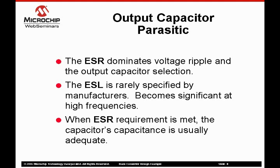Rarely is the capacitor's capacitance value an issue when operating at moderate frequencies of less than 100 kilohertz. Exotic capacitors such as specialty electrolytic, large ceramics, or film capacitors are useful in space-limited applications. These advanced capacitors feature extremely low ESR for their small size, but their small size implies very limited capacitance. Limited capacitance of advanced capacitors may create issues of system stability and voltage droop.